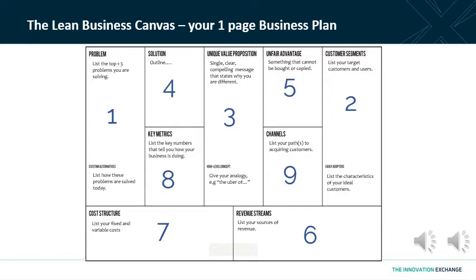It's used for idea generation and also for communicating what your business is all about. So let's take a look at the Lean Business Canvas. You can see that there are nine different sections to it, numbered in approximately the order that you might fill them in, although that's not mandatory — you can make your own decision on that.